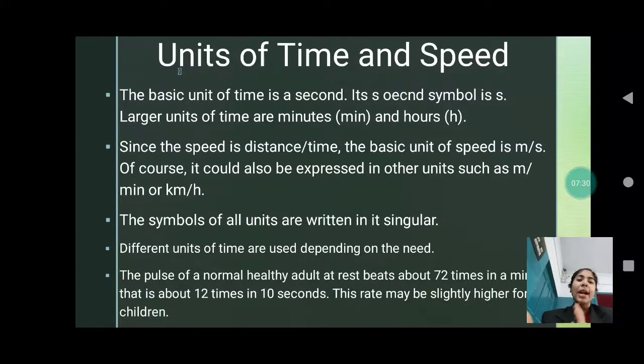What are the units of time and speed? The basic unit of time is second. Second's symbol is S. Larger units of time are minutes and hours. Since speed is distance by time, the basic unit of speed is meter per second. Of course, it can also be expressed in other units such as meter per minute or kilometer per hour. The symbols of all units are written in a singular form. Different units of time are used depending on the need. The pulse of a normal healthy person is about 72 times in a minute. This is about 12 times in 10 seconds. This rate may be slightly higher or slightly lower in children.